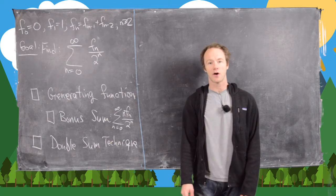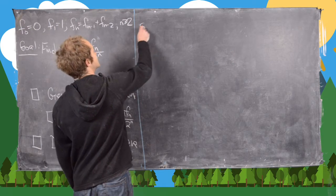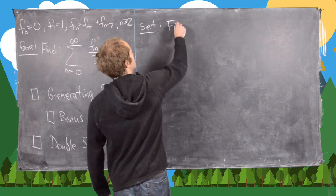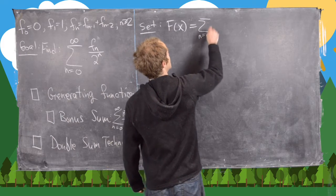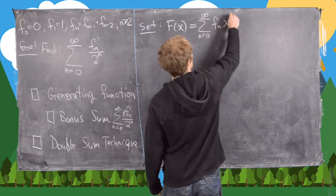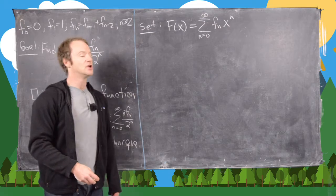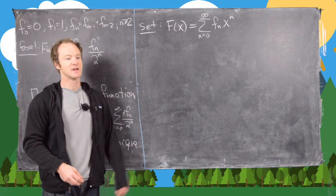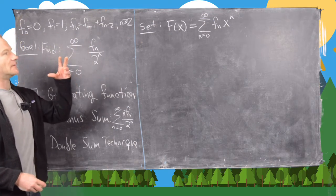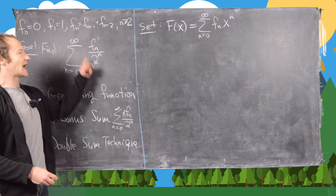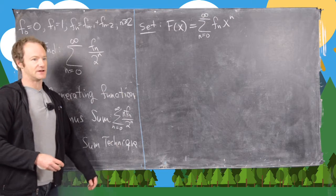For the generating function approach, we set the function F(x) equal to the sum from n=0 to infinity of f_n · x^n — a power series whose coefficients are the Fibonacci numbers. You can figure out where that converges; it does include x = 1/2, which we'll plug in later.